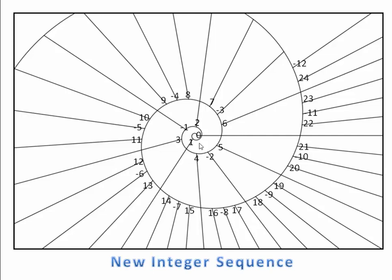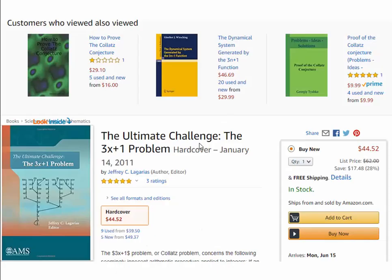Mathematicians have been searching for this pattern for more than 80 years. This problem, the Collatz problem, or the Collatz conjecture, is also referred to as the 3x plus 1 problem, or the 3n plus 1 problem.